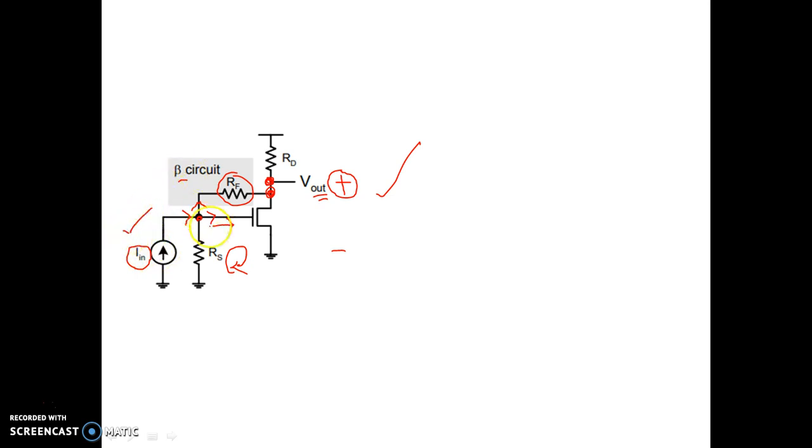So as we have to apply KCL, this is shunt mixing. So this is shunt mixing voltage sampling, that is voltage shunt feedback topology.